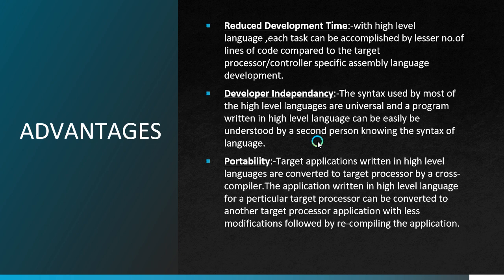Moving to advantages of high level language based development. There are three advantages: reduced development time, developer independency, and portability. For reduced development time, the developer requires only little or less knowledge about hardware details or the architecture. The developer will only need knowledge about the syntax of the high level language. The rest of the things, like architecture details and hardware details, will be taken care of by the cross compiler. So the ramp up time required by the developer in understanding hardware and architecture details is reduced, making for reduced development time.